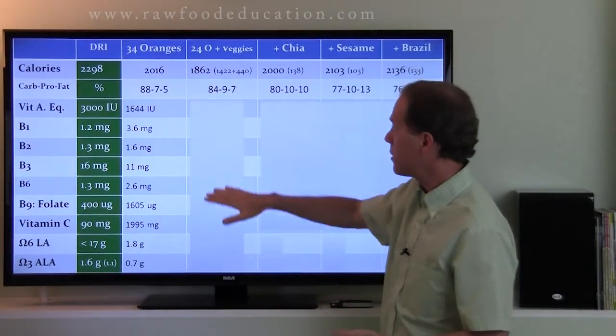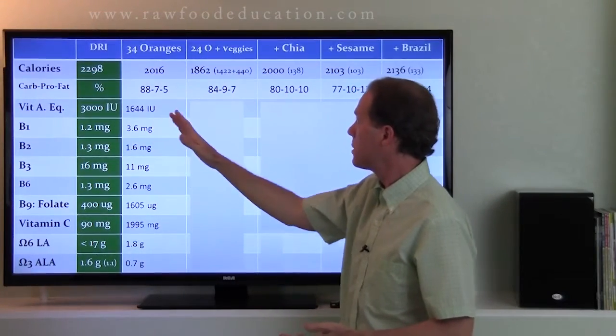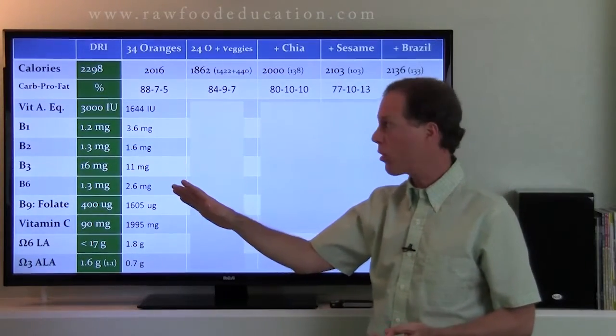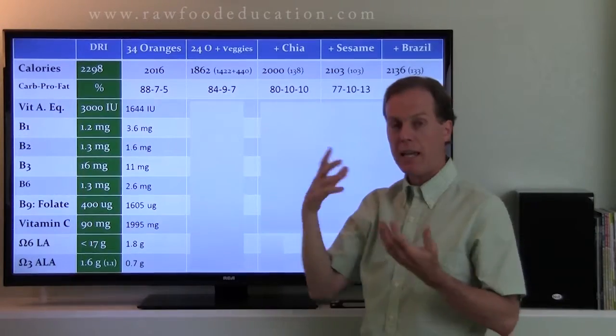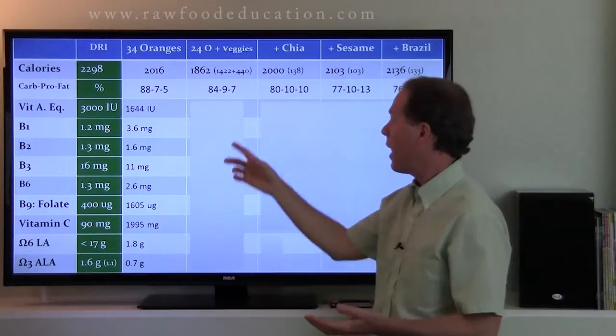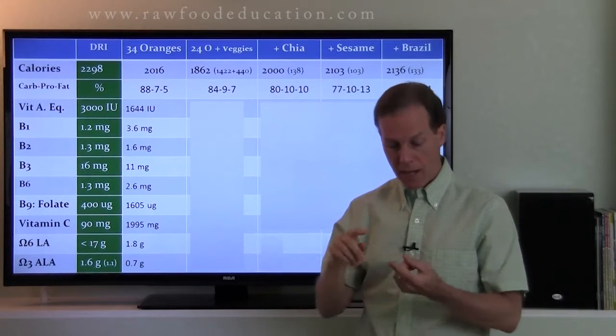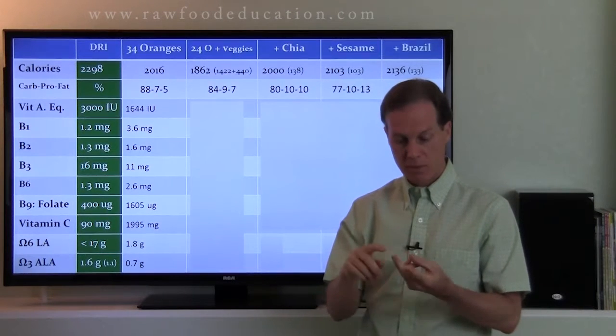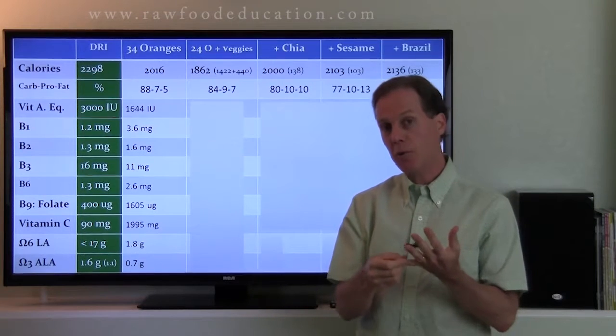So, once again, just like last time, same meal plan. I took away almost 600 calories worth of oranges to go to 24 oranges instead of 34. And in their place, I added 440 calories worth of vegetables. I added a head of lettuce, a large zucchini, four tomatoes, and a head of raw cauliflower.